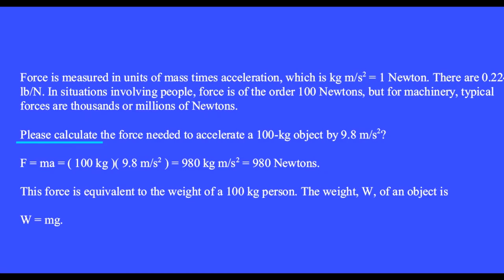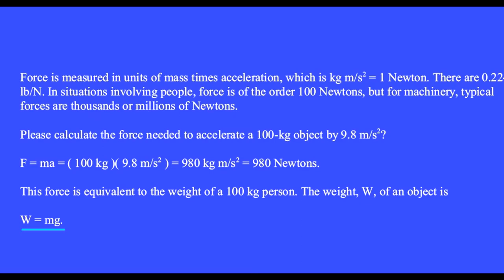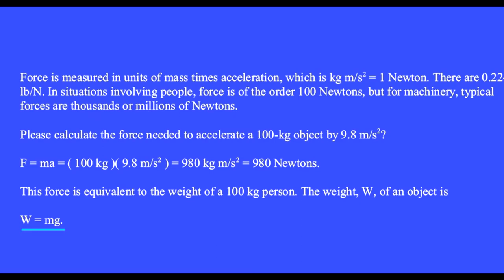Please calculate the force needed to accelerate a 100 kg object by 9.8 meters per second squared. We have F equals MA equals 100 kg times positive 9.8 meters per second squared equals 980 newtons. This force is equivalent to the weight of a 100 kg person. The weight W of an object is W equals MG. This weight is due to the gravitational force of attraction between the object and the earth.